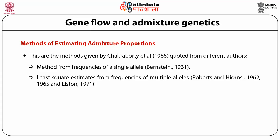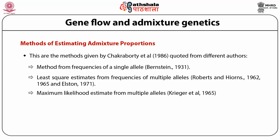The next method is the method of maximum likelihood estimate from multiple alleles. This method first assumes that allele frequencies in the parental population are known without error, but a sample of phenotype distribution from the hybrid population is drawn following multinomial sampling. Assuming that the hybrid population is at Hardy-Weinberg equilibrium, the expected allele frequency in the admixed population is obtained as calculated by the Bernstein equation. The genotype probabilities can then be represented as a function of the known allele frequencies in the parental population and the unknown admixture components, and maximization of the log-likelihood function can be done by the Newton-Raphson method.